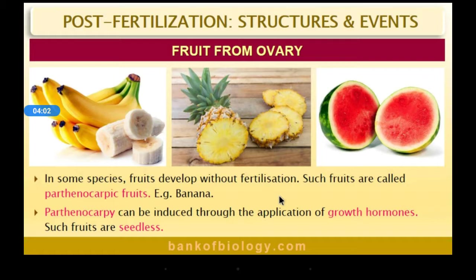Parthenocarpy can be induced through application of growth hormones — farmers can produce such fruits this way. Most such fruits are seedless, meaning seeds are not formed. Examples include banana, pineapple, and seedless watermelon.